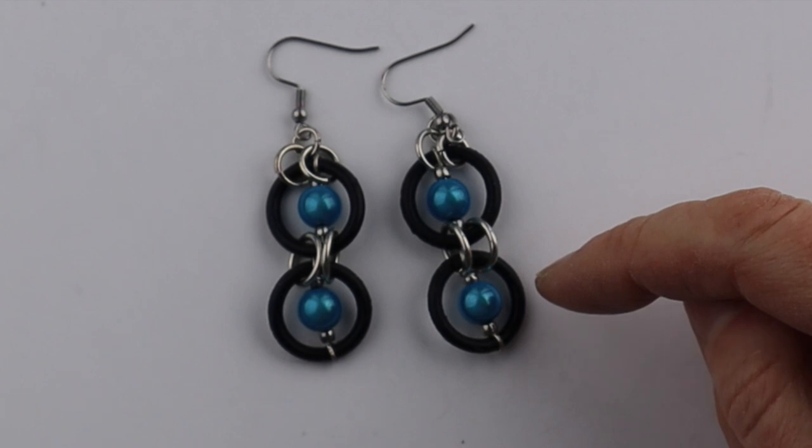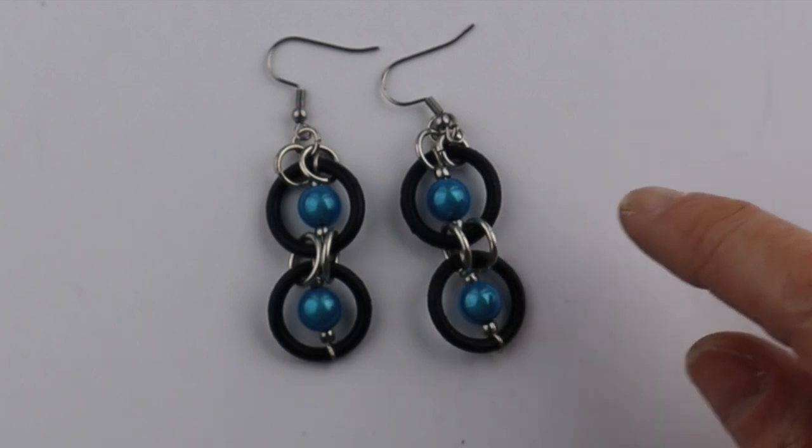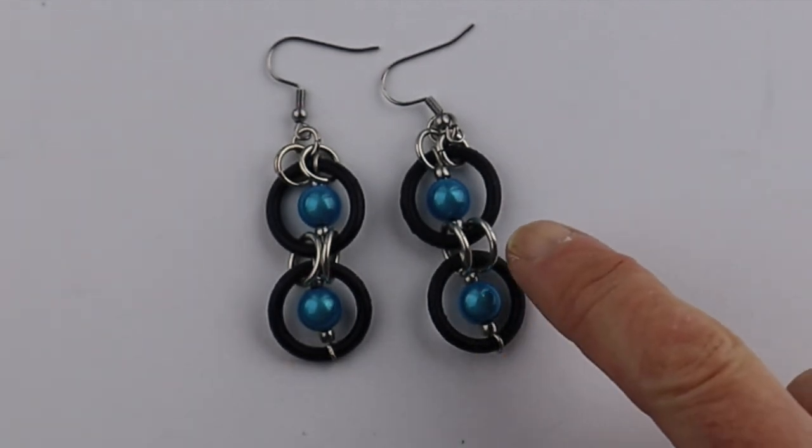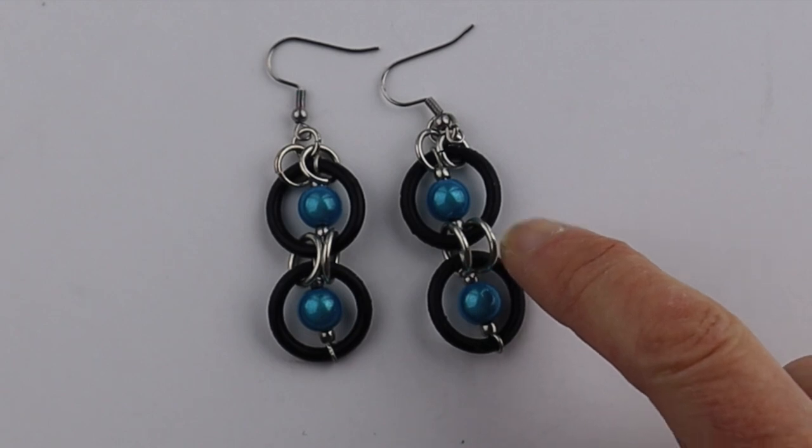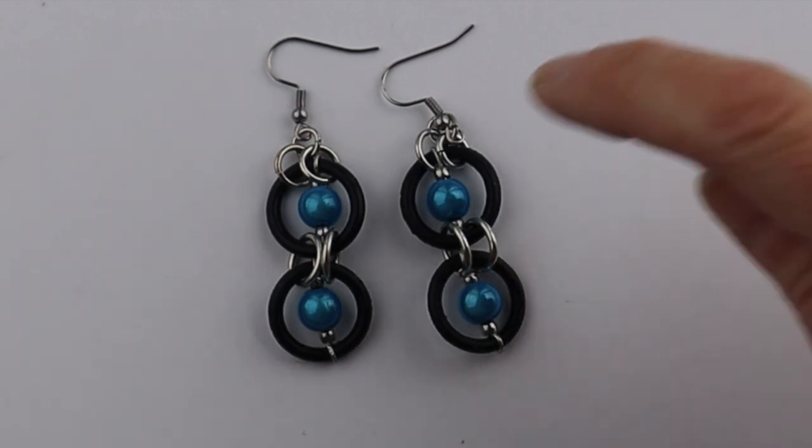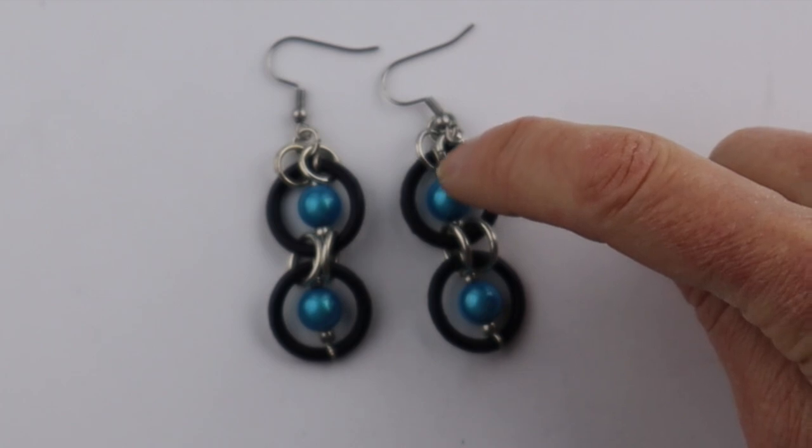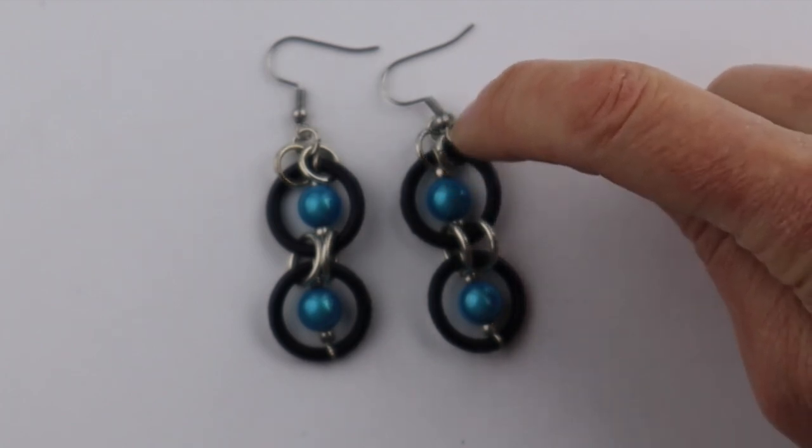Here are the finished earrings. I used two O-rings for each one. You could use three if you want. You could use different sizes. As for the bracelet, I used 10 millimeter jump rings to attach the rings together. These are 6 millimeter at the top, and the top jump ring is 5 millimeter. You see it goes super nicely with the bracelet.